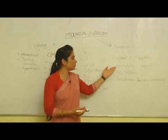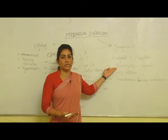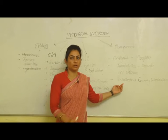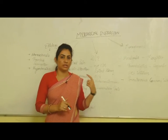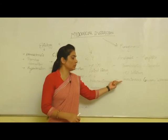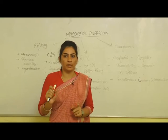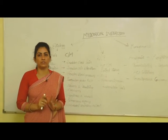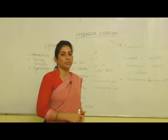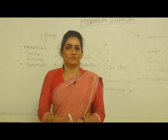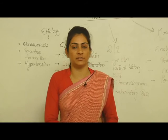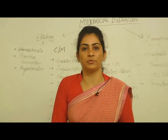When thrombolytic therapy is not working properly, a surgical intervention called percutaneous coronary intervention (PCI) is performed. It is used when thrombolytic drugs are not responding properly — the thrombus plaque is removed by this surgical procedure. This is all about myocardial infarction. If you want to know more about this disease, please visit our website www.growkpu.com. Thank you.